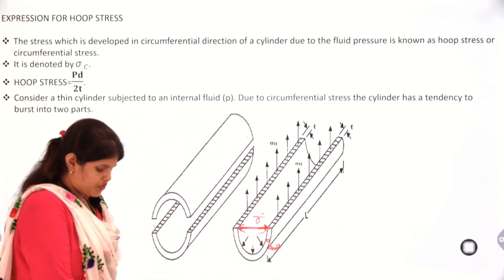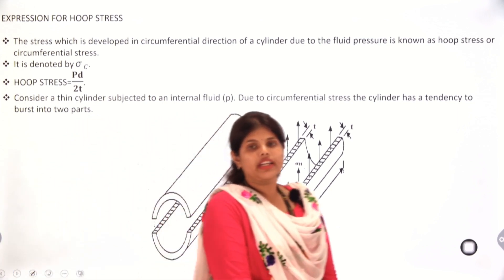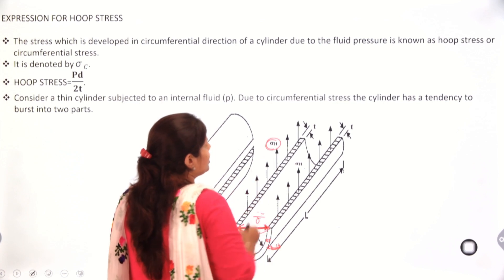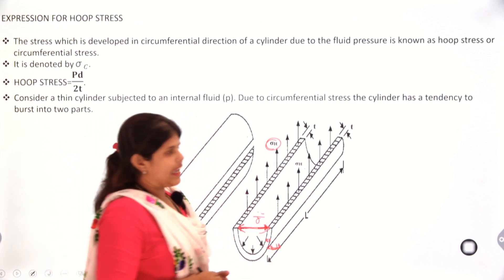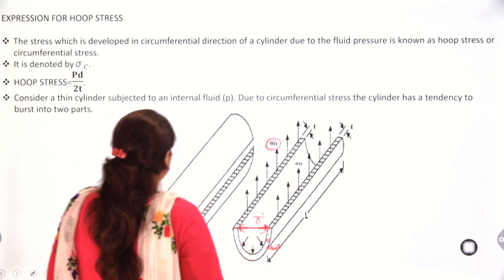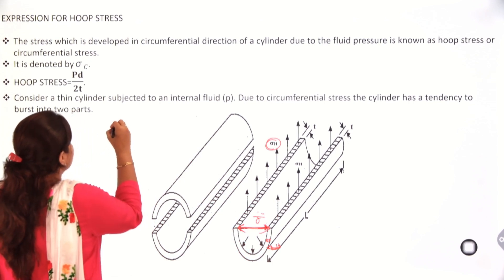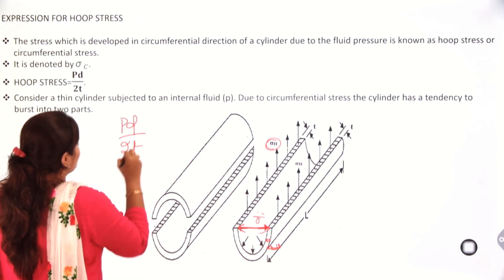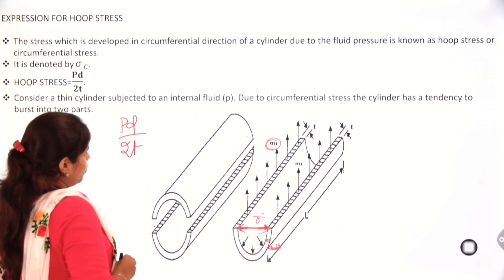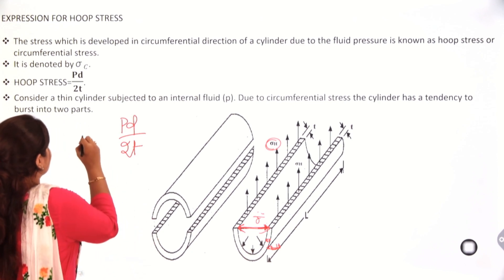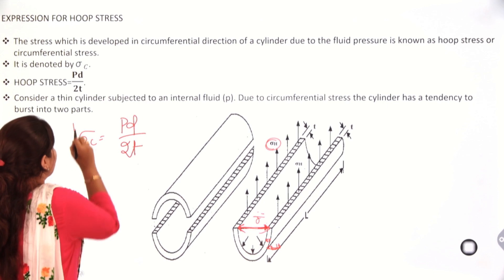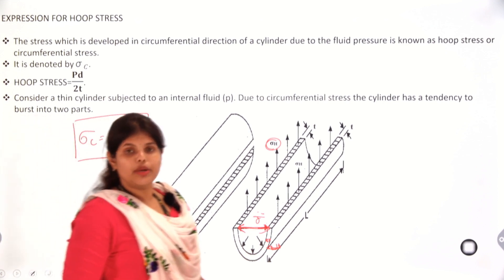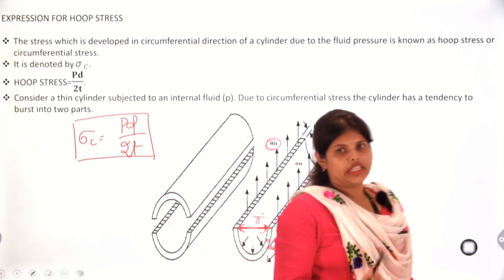Hoop stress is denoted by sigma C, or you can also denote it as sigma H. The formula for hoop stress is Pd upon 2t. In this expression, we will prove how sigma C equals Pd by 2t.